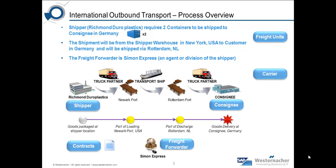The process we will demonstrate is an international outbound transportation requirement detailing the order management and planning process. A shipper, Richmond Dewar Plastics, needs to ship two containers to a consignee in Germany. To do this, it will make use of an internal transportation division called Simon Express as the freight forwarder. The transportation is multimodal, requiring a truck from the shipper's warehouse to the port in Newark, then a ship to Rotterdam, and then another truck from Rotterdam to the consignee in Germany. Now let's see this in the TM system.